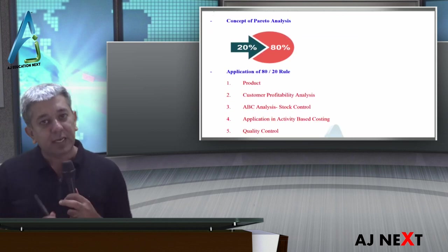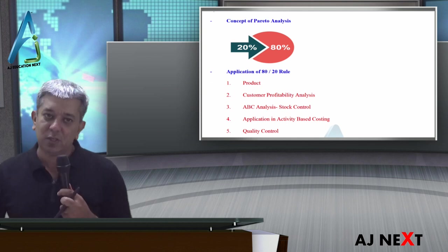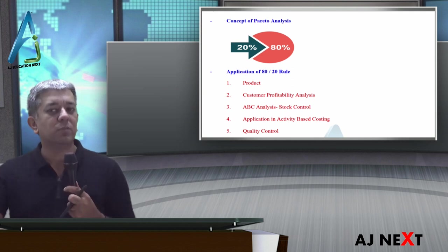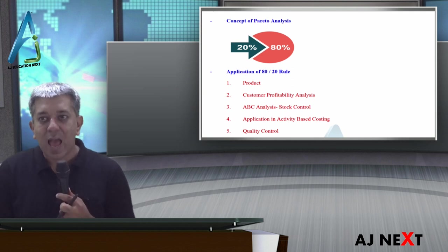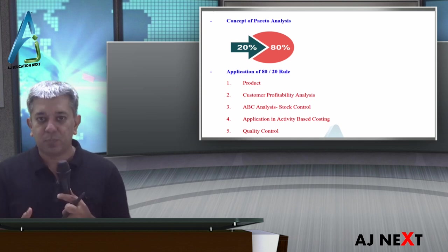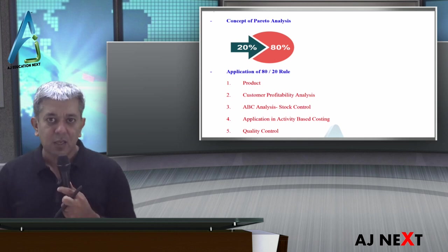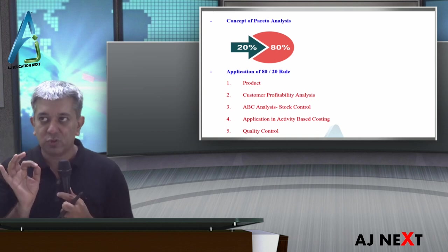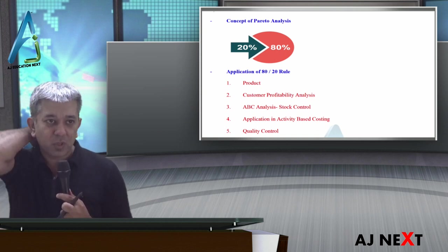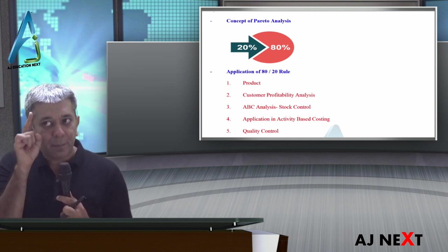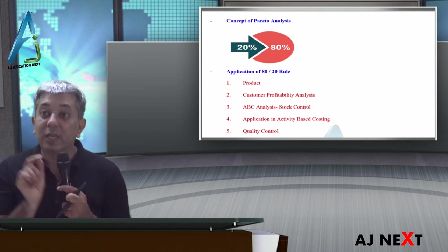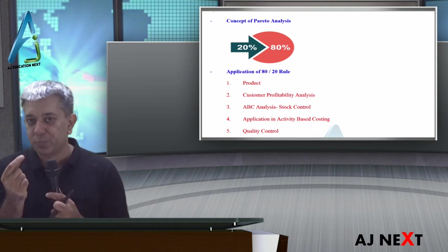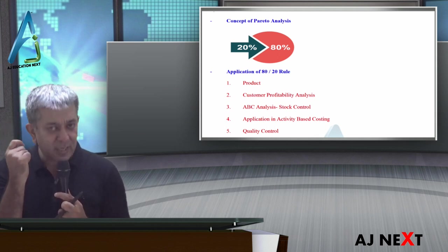He said 80% of the most important things only constitute 20% in terms of number. So this 20% becomes very important. Example: Apple's 80% revenue comes from just 20% of their products, meaning iPhone and iPad. That is the 80-20 rule. Most of the revenue, most of the profit, 80% comes only from 20% of their products. So for Apple, these products are very valuable and they should pay more attention to them.